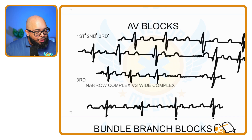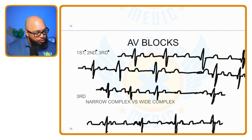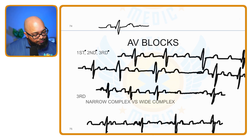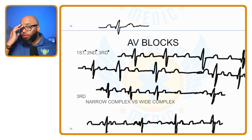In a first degree block, let's first draw a normal rhythm. We have a P wave, PR segment, QRS, and a T. You may or may not see a U wave.